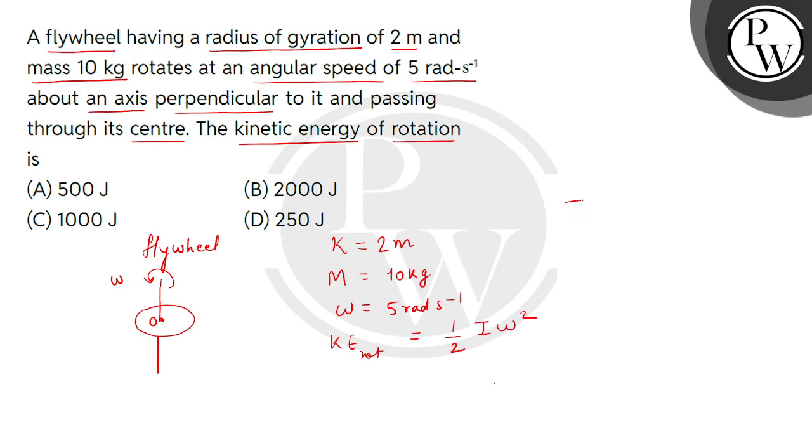Now, we have to consider I, how to make moment of inertia MK square. M K value है 10, K square हो जाएगा 4, तो moment of inertia I की value आएगी 40, unit है kg meter square.